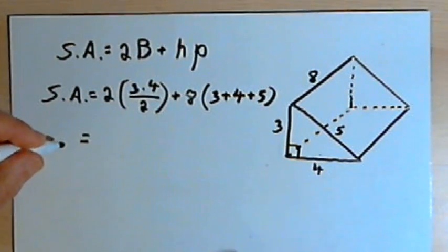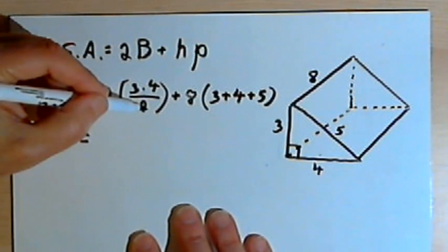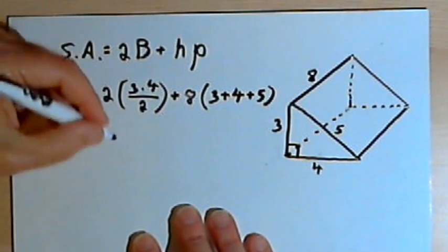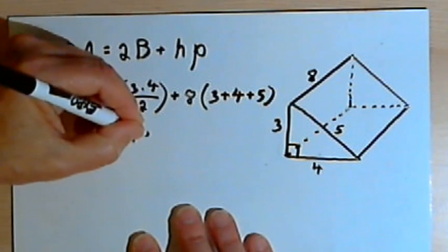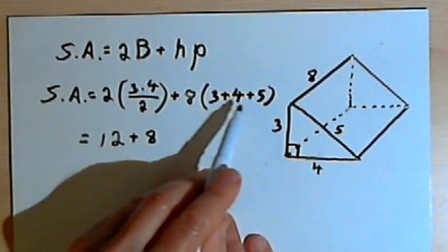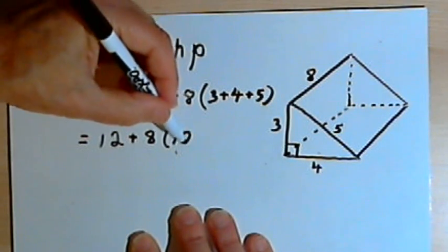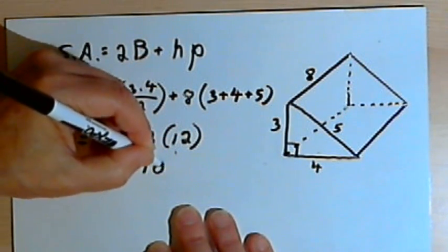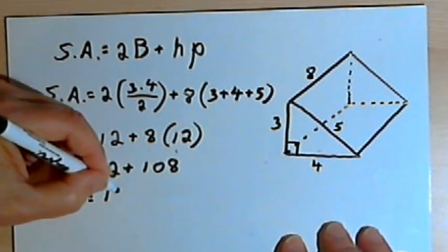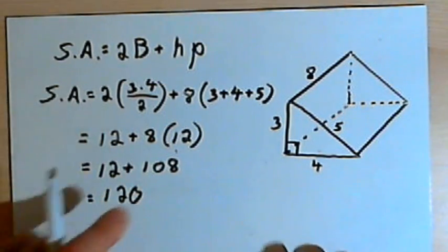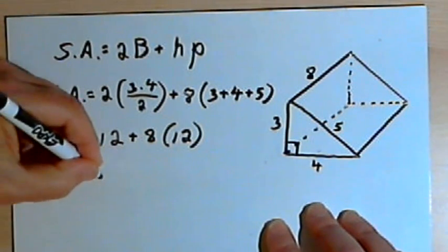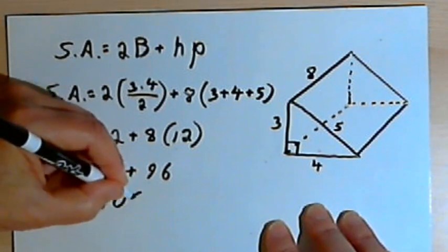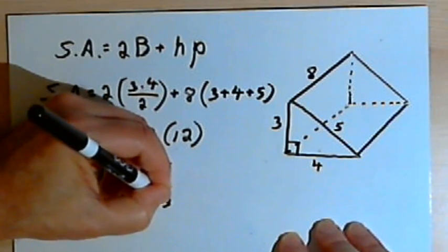Now we've got all our numbers filled in, we just have to do the math. 3 times 4 is 12, 12 divided by 2 is 6. So 6 is the surface area for each of the bases. I'm going to multiply that by 2 because there's two bases, so 2 times 6 is 12. Then I want 8 times the perimeter. The perimeter is 3 plus 4 is 7, plus 5 more is 12. So that's 8 times 12. Now I've got 12 plus 8 times 12 is, I'm sorry, 8 times 12 is 96. Let's do that again. So that's 12 plus 96, 12 plus 96 is 108 square inches.